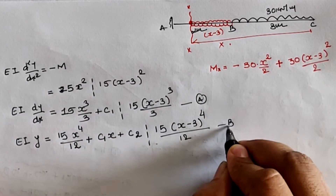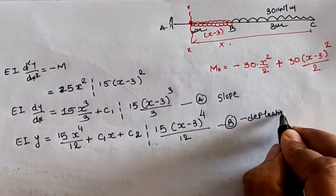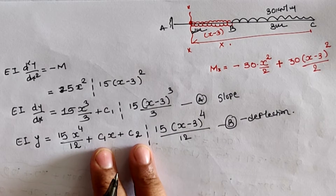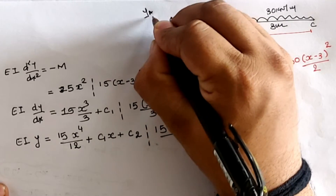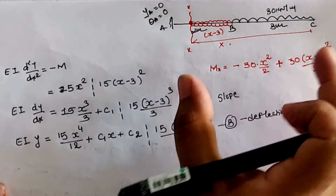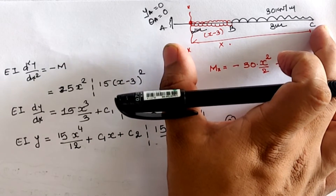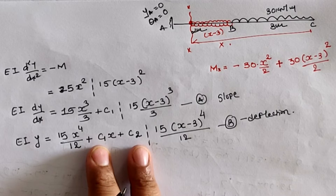To find the integration constants C₁ and C₂, we apply boundary conditions. At the fixed support, both deflection and rotation are zero. Location A is at a distance of 5 meters from our origin at C, so we apply the boundary conditions at x = 5 m in equations A and B.